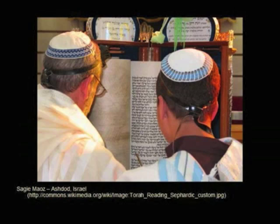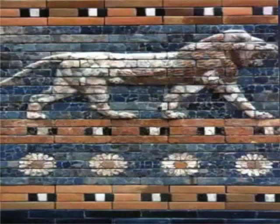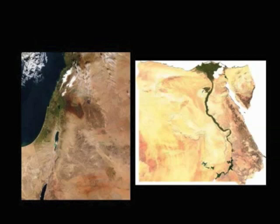The Torah is read every year according to a Torah reading schedule. The Babylonian Jewish community divided the Torah into 54 portions, which allowed for the complete reading of the Torah in one year. The Egyptian and Palestinian Jewish communities divided the Torah into 154 portions, allowing for the complete reading of the Torah in three-year cycles, called the triennial cycle.